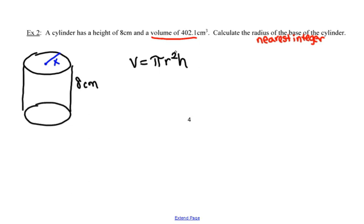And I'm going to substitute in the information I know. In this case, I know the volume is 402.1. So in my formula for volume, I'm going to replace volume with 402.1.